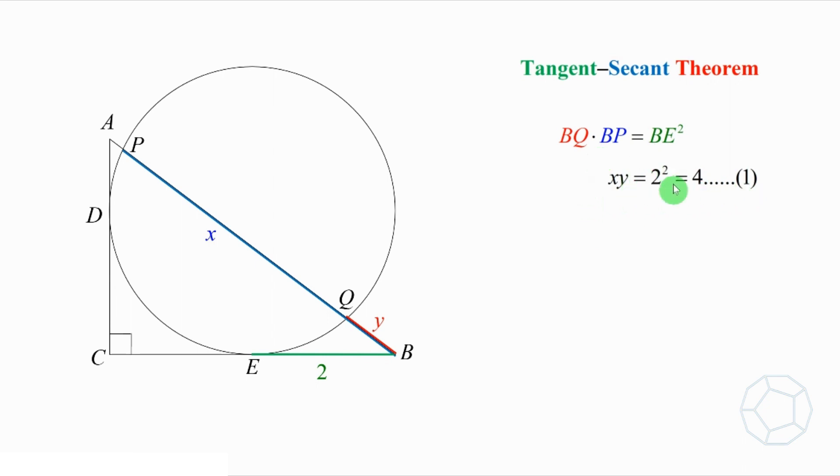To solve for the two unknowns X and Y, we need two equations. Let's apply the theorem again. This time, we look at the tangent AD and secant APQ. Therefore, AP times AQ is equal to AD squared.